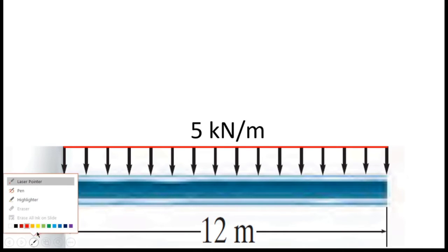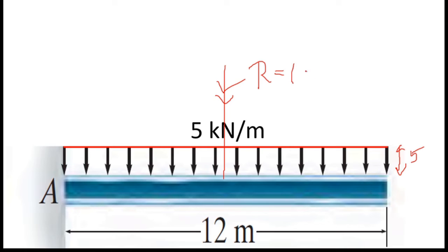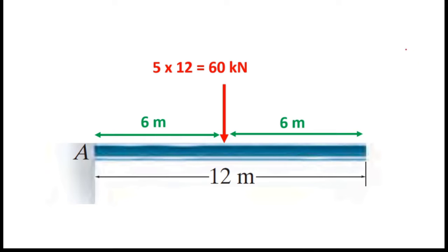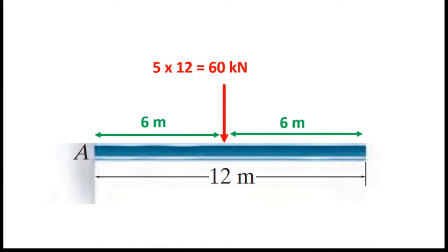Now I have to find the resultant force of this distributed load. For a uniformly distributed load, we can find the resultant by finding the area. The height is 5 and the length is 12, so the resultant force is 12 times 5, which equals 60 kN. This is the area of this distributed load, so I write it here as 60 kN.